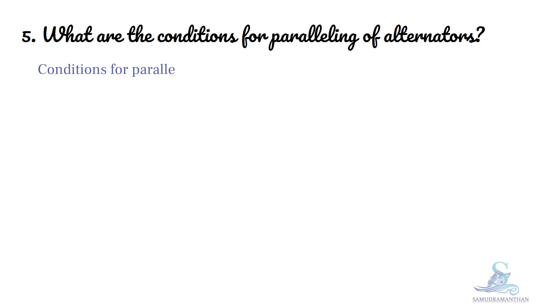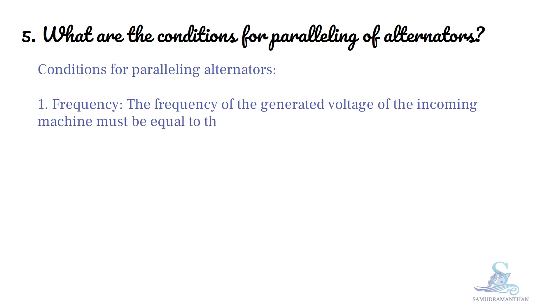Conditions for Paralleling Alternators. Condition 1: Frequency. The frequency of the generated voltage of the incoming machine must be equal to the frequency of the voltages of the bus bar.